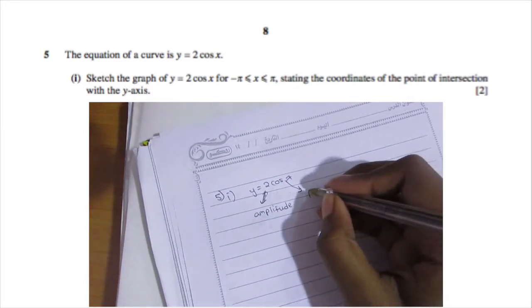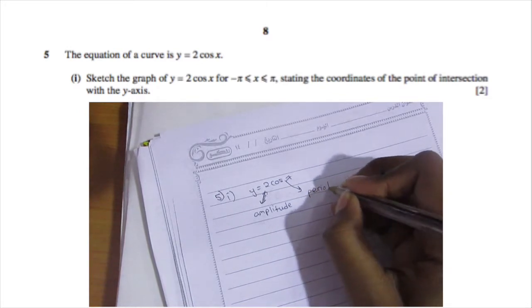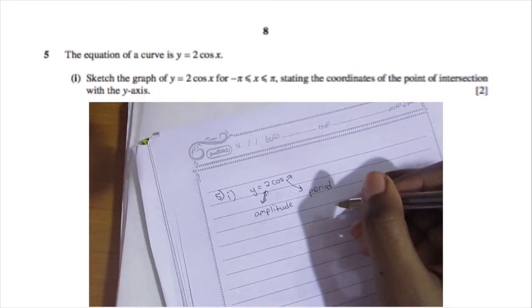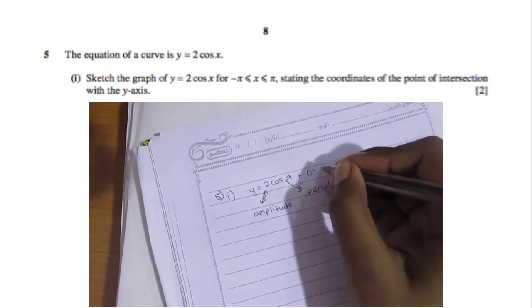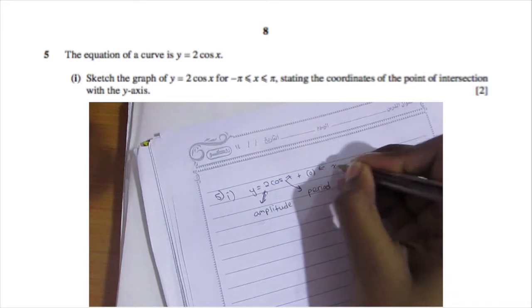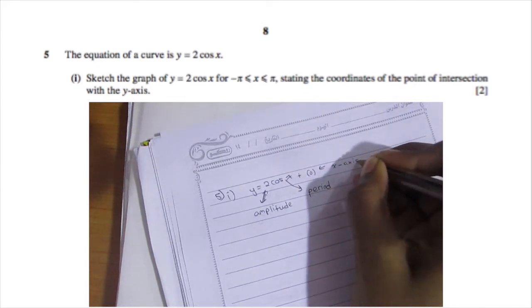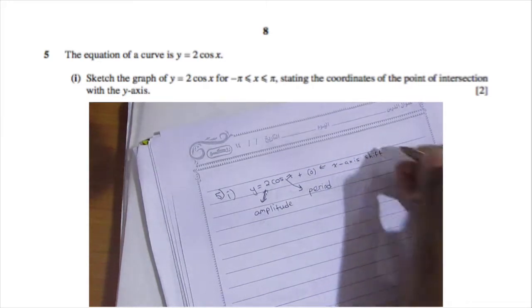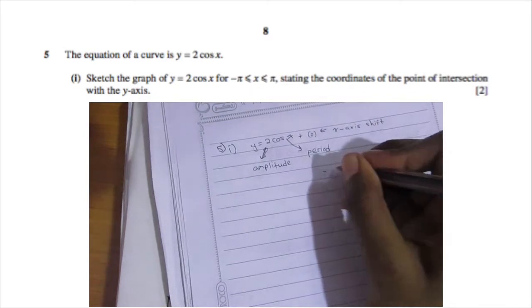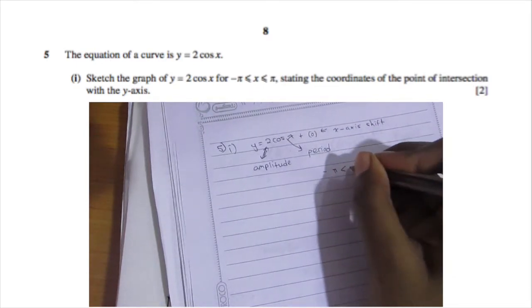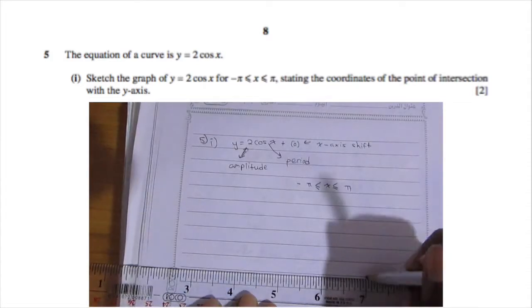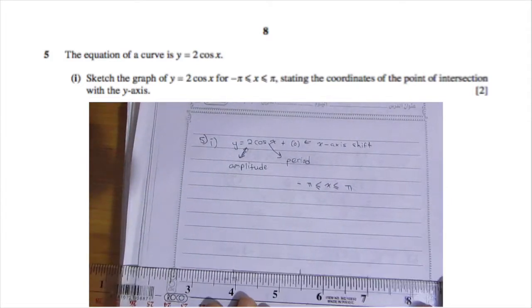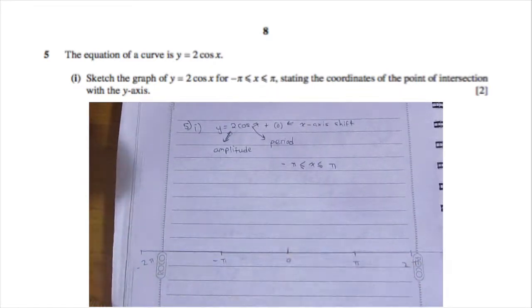Let's break down y = 2 cos x. The 2 at the beginning tells us about the amplitude — the maximum height the wave reaches. Between the cosine and the x is a 1, which we don't write, and that is the period — the number of waves between 0 and 360, or 0 and 2π. Then there's a plus c term, but in this case there's no shift, so the wave doesn't shift up or down on the y-axis.